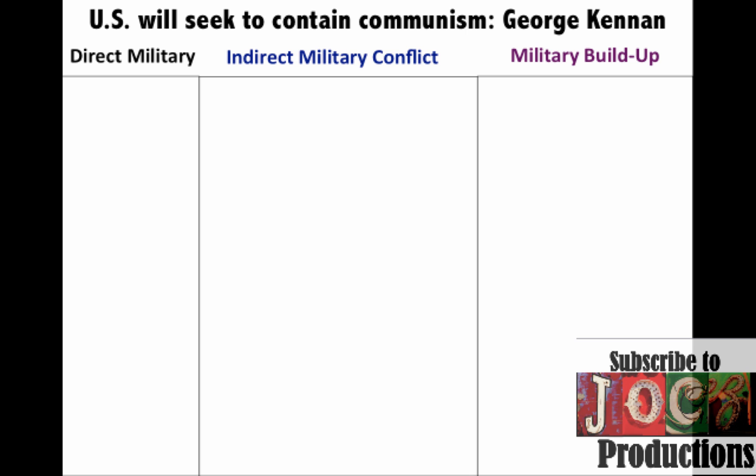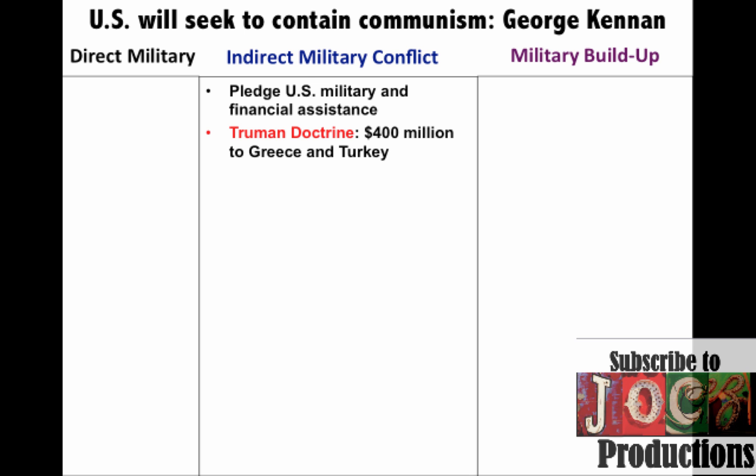Most of the time this is going to be done with indirect military conflict and support — the U.S. pledging military and financial assistance to countries trying to resist perceived or real communist aggression. For example, you get the Truman Doctrine, where we give $400 million to Greece and Turkey to keep them from falling to the communists — we are successful in both countries. The Marshall Plan is established under the Truman administration; we give billions of dollars to Western Europe to rebuild countries, especially France and Italy, so that people won't be inclined to vote for the communists. That is a huge success as well.